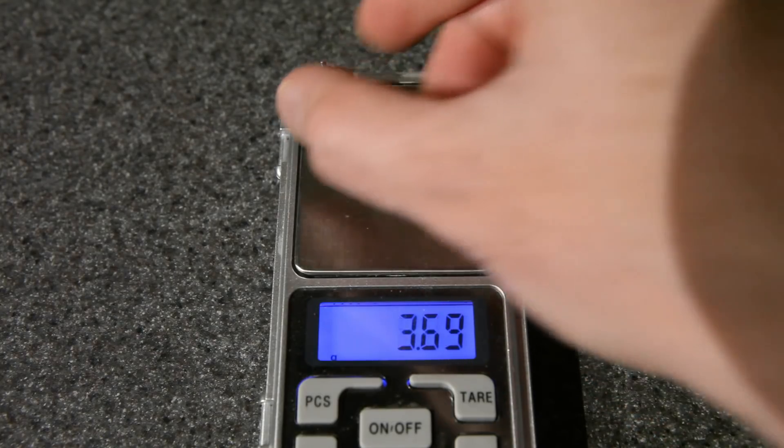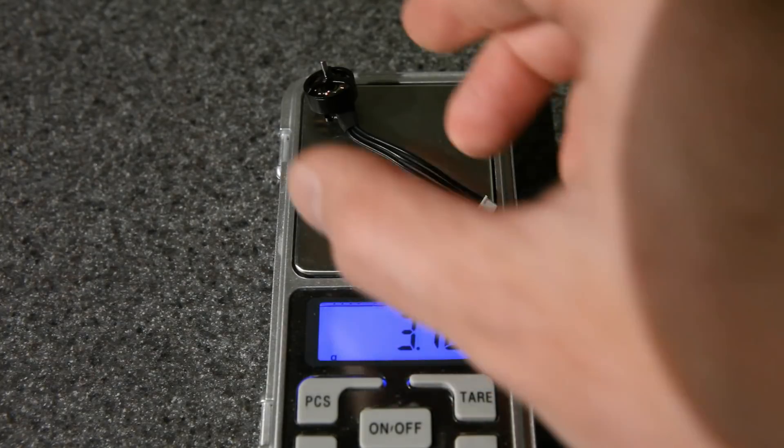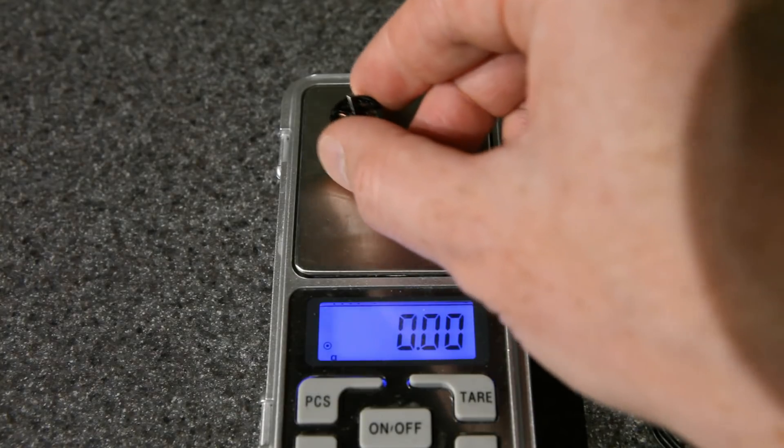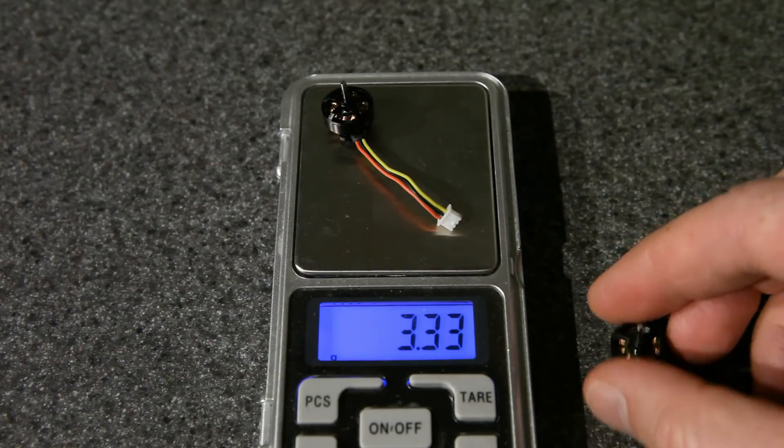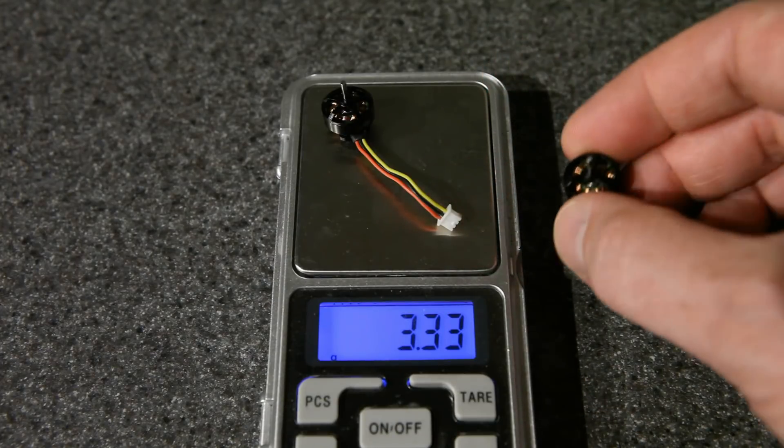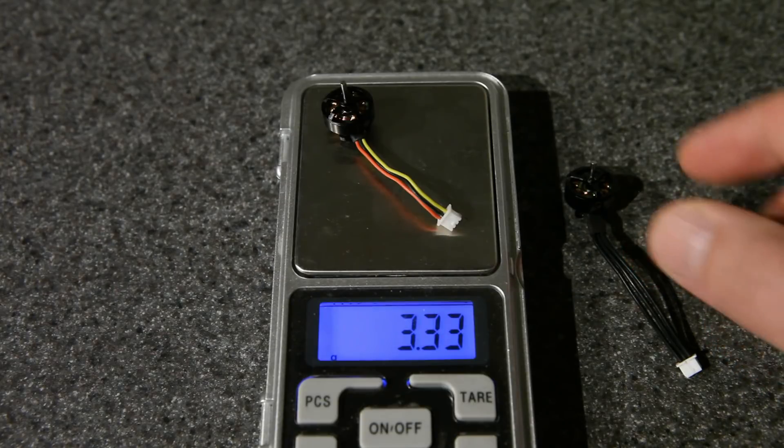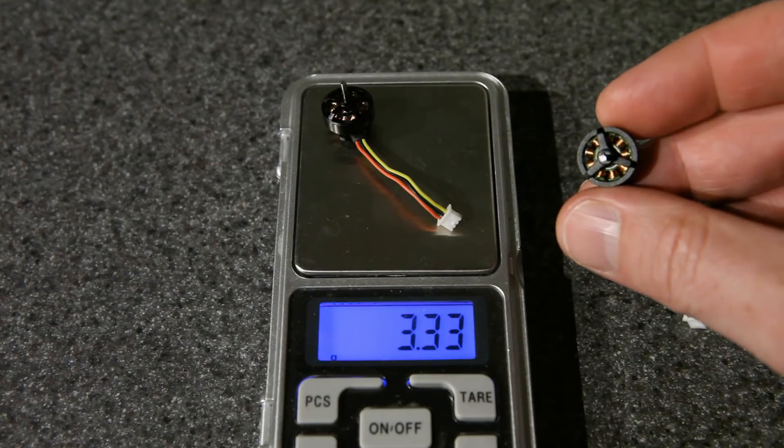If we put one on the scale, we can see that it's just under 3.8 grams, and that's not bad for an 1103, but it's heavier than its predecessor. This was 3.3 to 3.35 grams, so that's about half a gram difference between these two motors, or two grams difference when you have four of these motors. Two grams may not sound like a lot to you, but in the size builds we're talking about, that can be pretty significant.